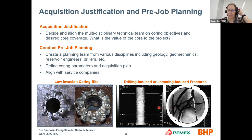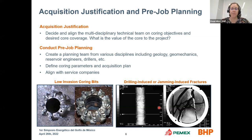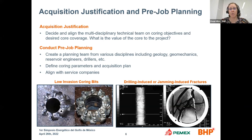Some of the things we discuss in planning include low invasion coring bits — shown in the figures on screen — which reduce the amount of drilling mud invasion into the core, preserving in-situ fluids. On the right-hand side is an example of damage that can occur from incorrect drilling parameters such as weight on bit or speed. You can end up with drilling-induced or jamming-induced fractures, and this CT scan shows some of that drilling-induced damage.